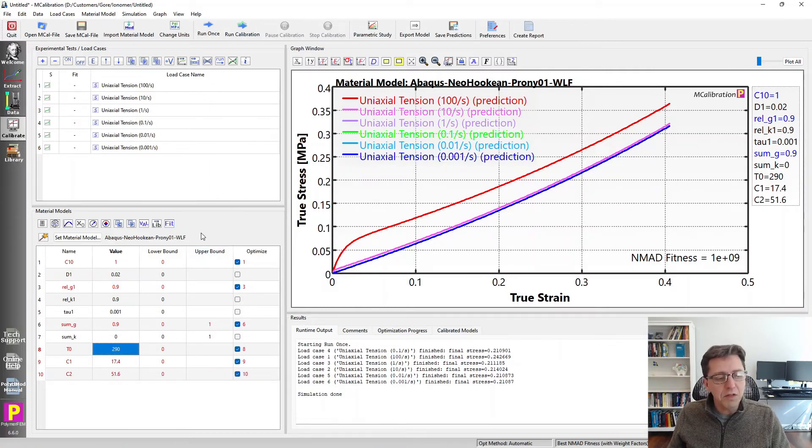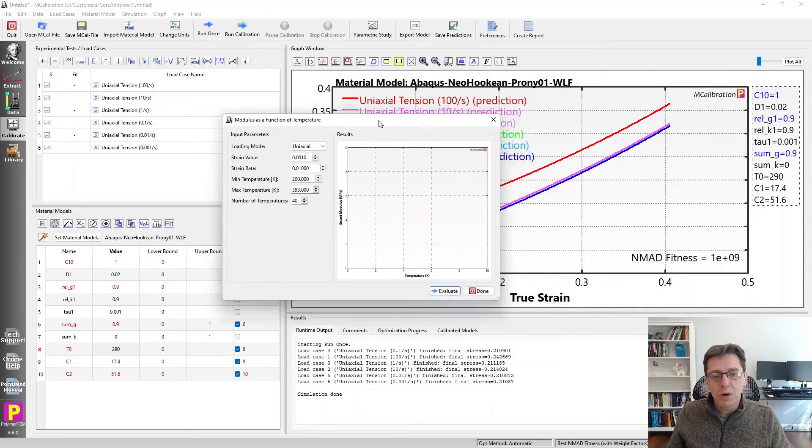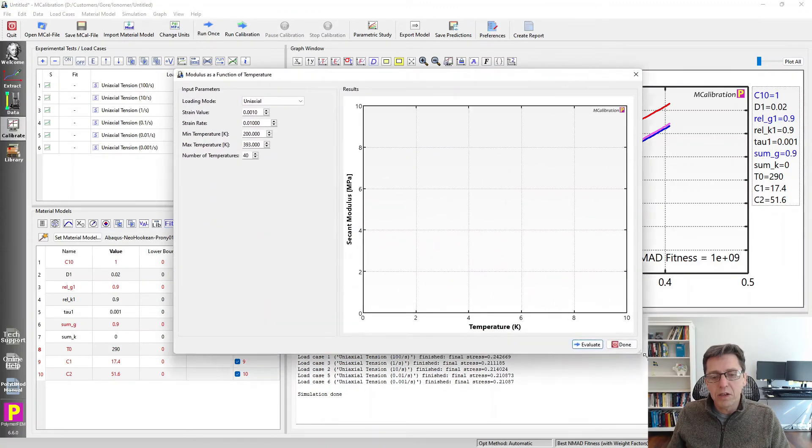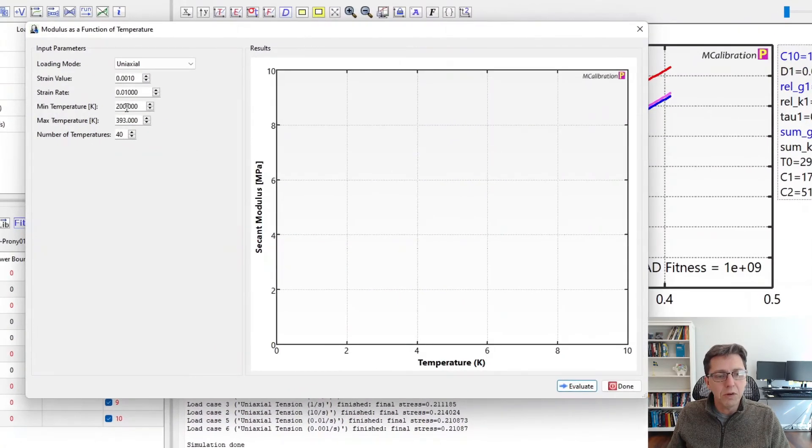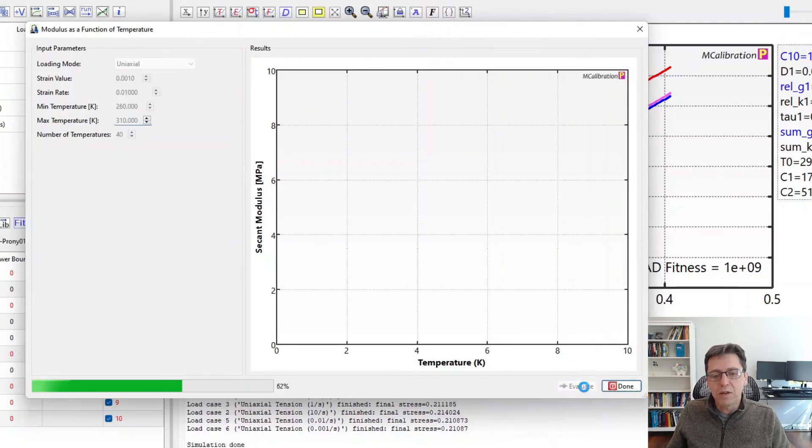In MCalibration, there's another feature that can be useful in a case like this. It's this one here. I'm going to look at how the modulus, the predicted modulus, depends on temperature. So I'm going to make this here from the lowest temperature 260 up to 310 perhaps. And then I'm going to evaluate this.